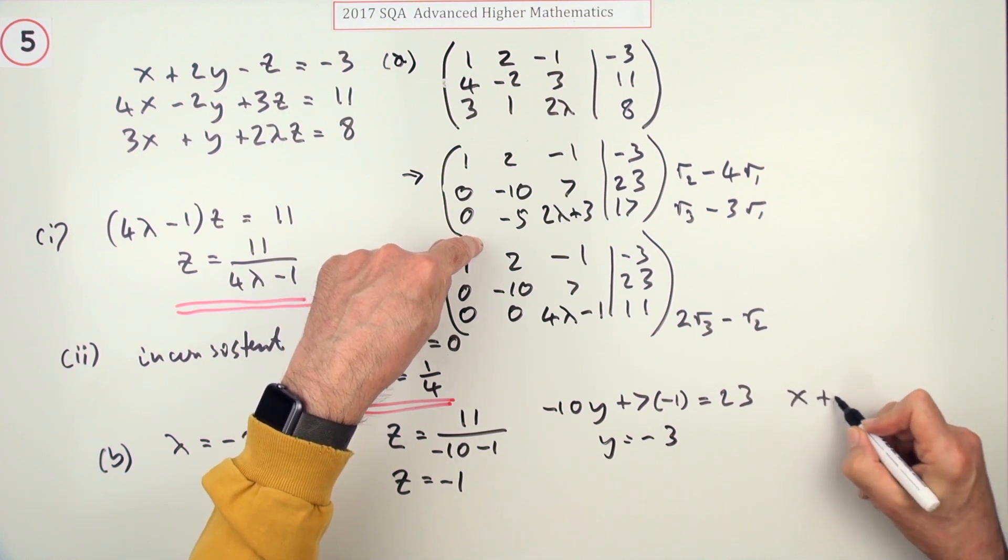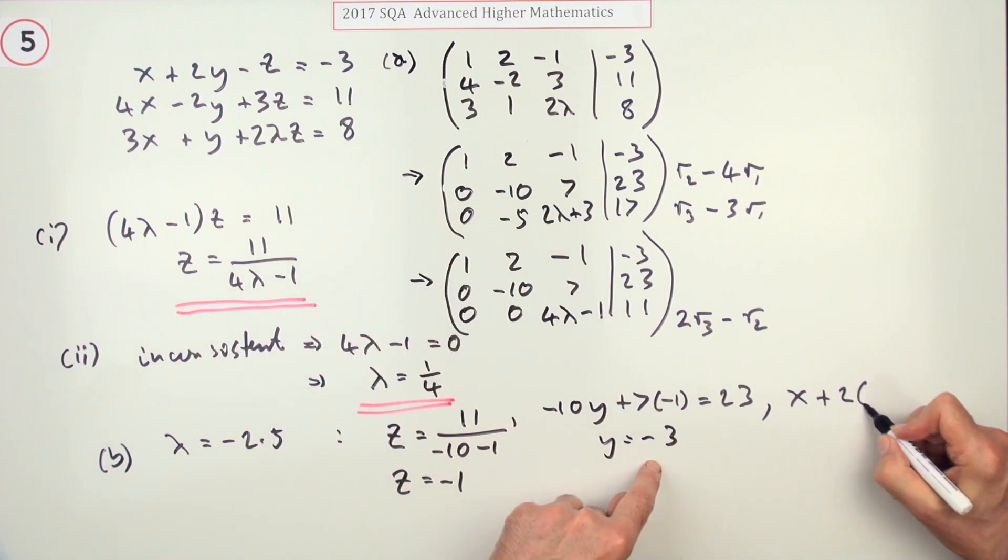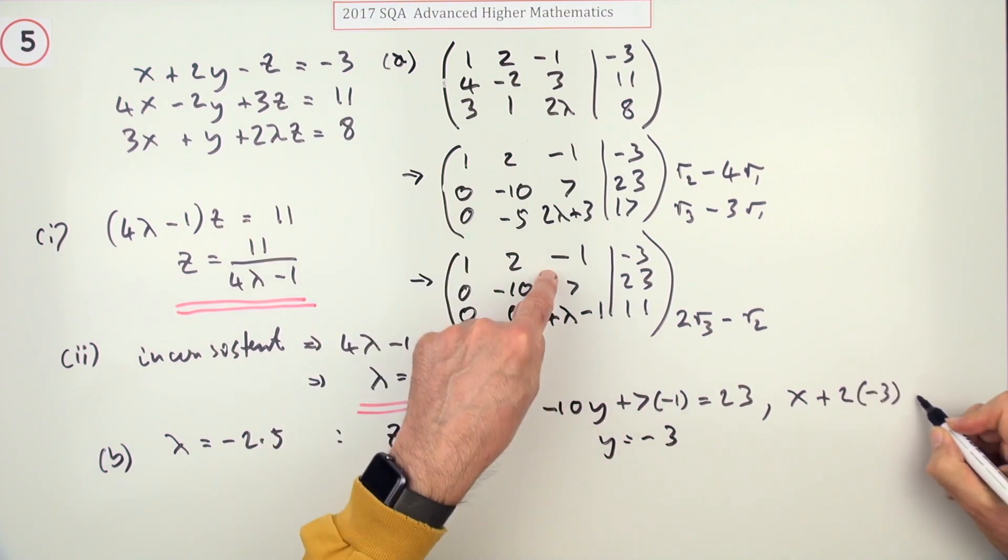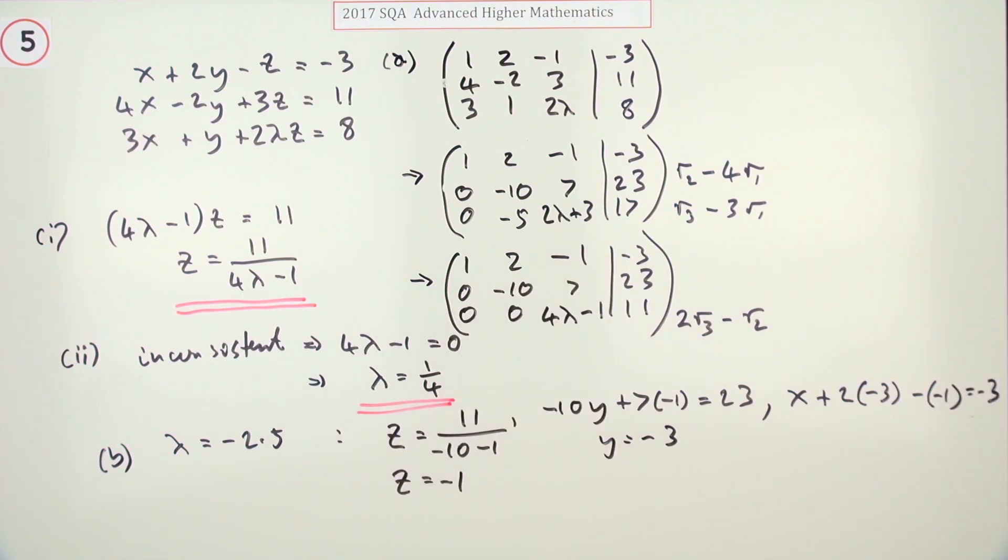Now I can jump up to the top line. That says x plus 2 of my y minus 1 of my z should equal a negative 3. So that comes to a negative 5 which goes across as a plus 5 to give you overall 2. So there you go. There's the solution to the system when lambda is negative 2.5. But I might even just put it down this way: 2, negative 3, negative 1.